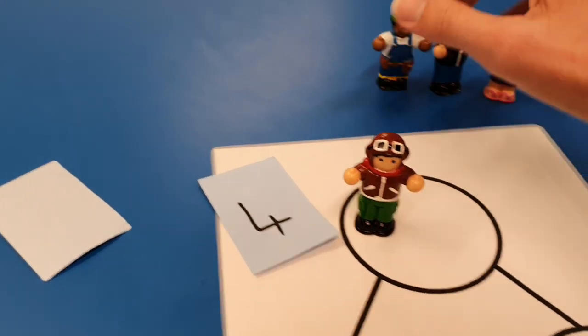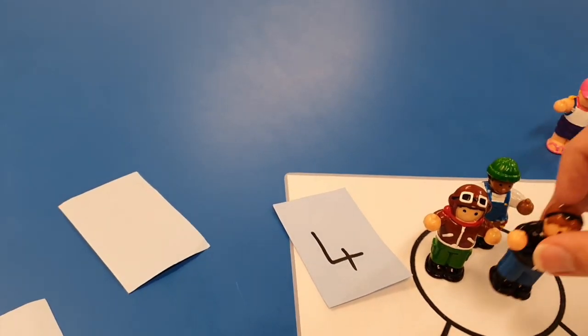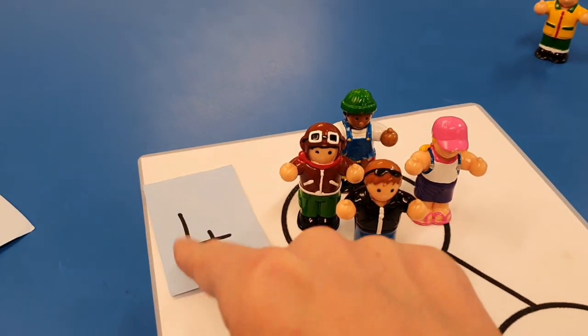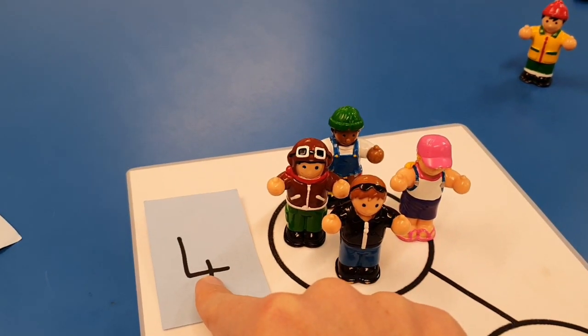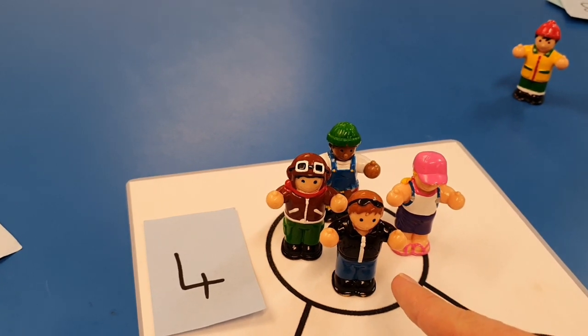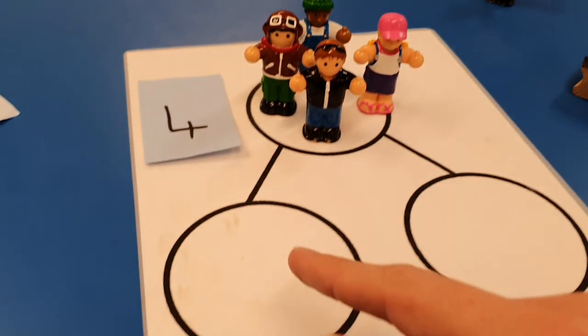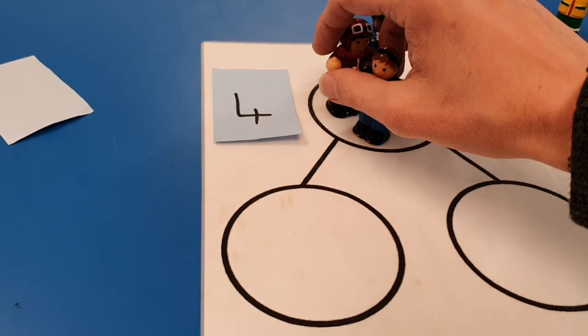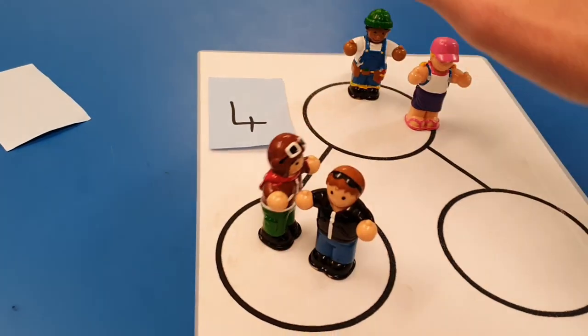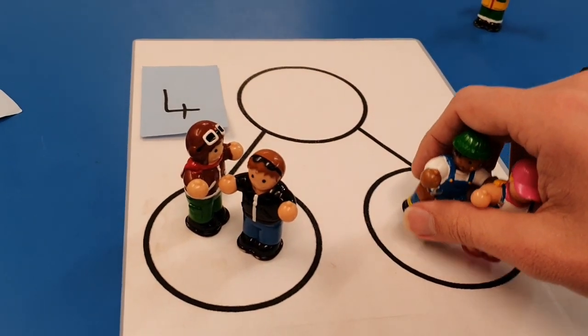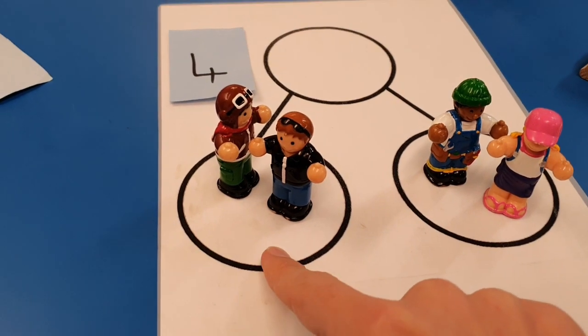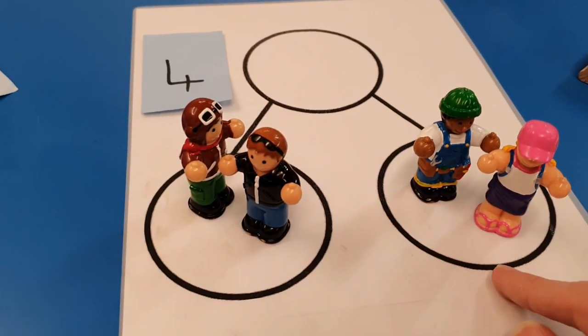So one, two, three, four. There's four. So there's the number and this is what it looks like. So can we move them so they go into the circles? And then your child could move some here and some here.